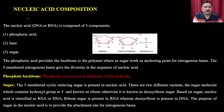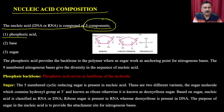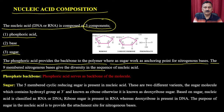The nucleic acid is composed of three components: phosphoric acid, a base, and a sugar. The phosphoric acid provides the backbone to the polymer. The sugar works as the anchoring point for the nitrogenous bases. The nitrogenous bases give diversity to the sequence of the nucleic acid.